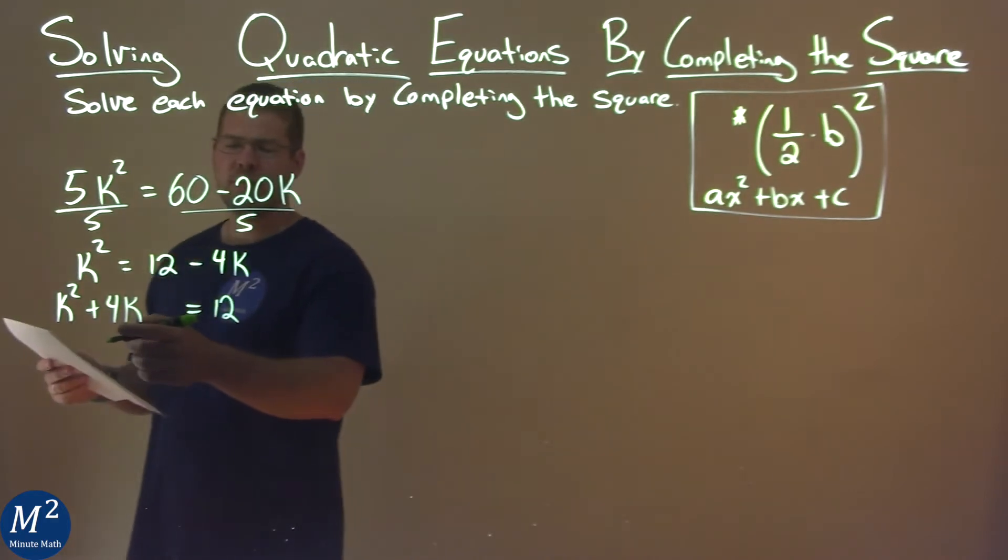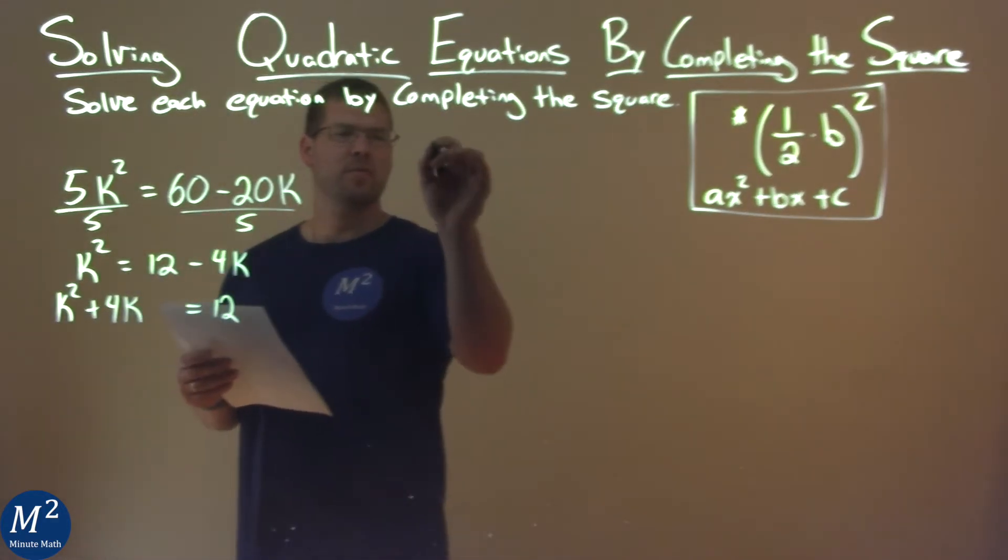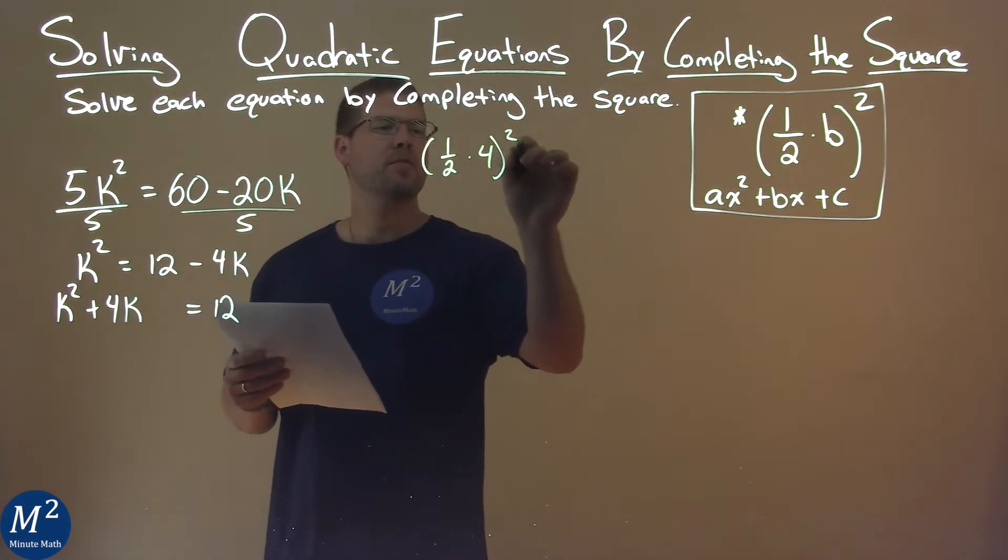I'm going to take down my b-value, and you'll see why I left the space there in a moment. My b-value being 4, and I'm using my formula: 1 half times 4, all squared.